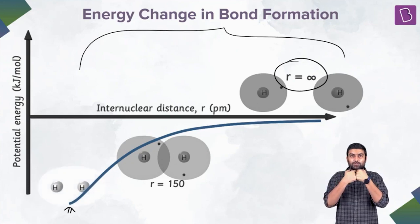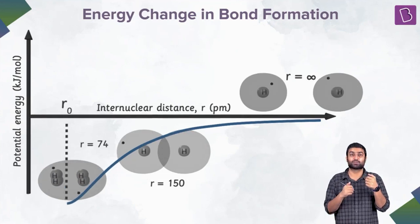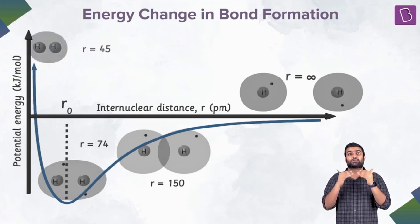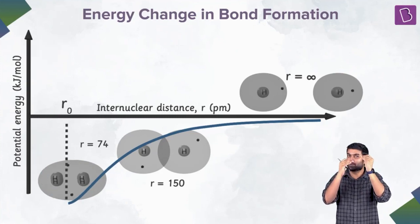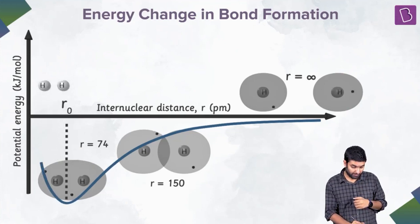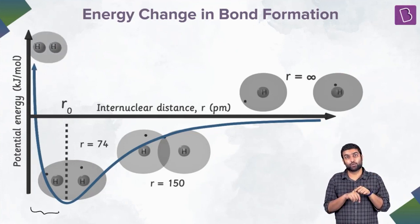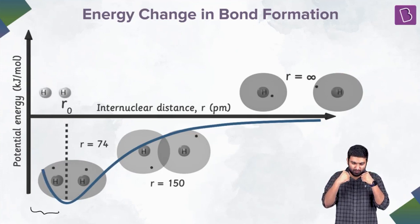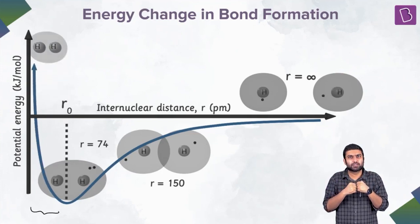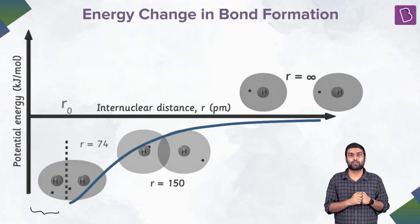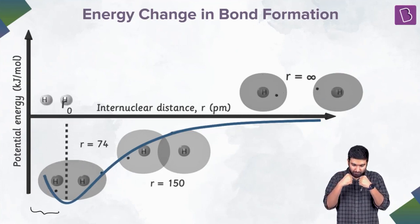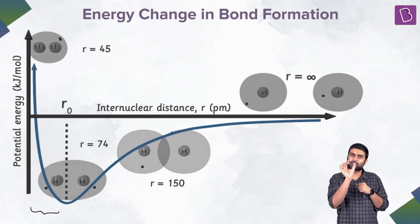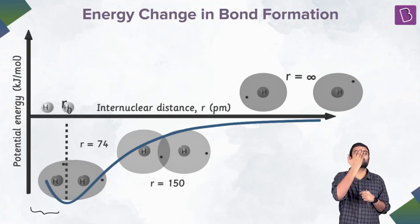If we move them even closer beyond this point, the repulsive forces become greater than the attractive forces in absolute amounts. There is now a net repulsive force. When two bodies are repelling each other and you try to bring them closer, potential energy increases. With a very, very small reduction in inter-nuclear distance, we have a significant increase in potential energy.